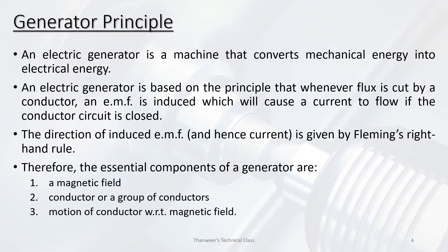Basically, an electrical generator converts mechanical energy into electrical energy. In the lab, we use a DC generator — a DC series generator — for experiments. The motor is rotated and the generator is rotated, and the supply is created. That is what we use in the lab.